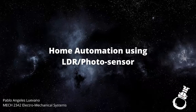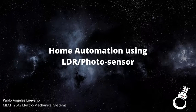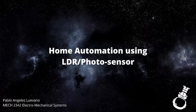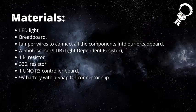Hello, this is Project One: Home Automating using LDR and Photosensors. My name is Pablo Angeles and this is the course Mechanical 2342 Electromechanical Systems. This will be the project. The materials will be the LED light, the breadboard, jumper wires to connect all the components into our breadboard, a photosensor LDR, a 1k resistor.